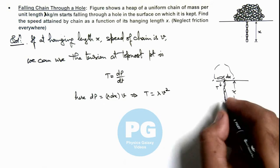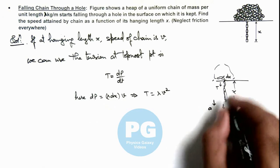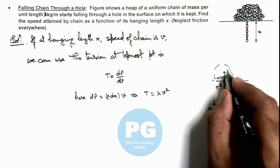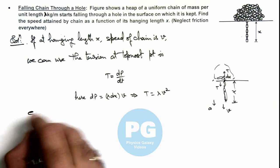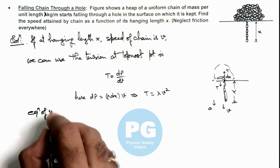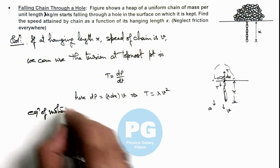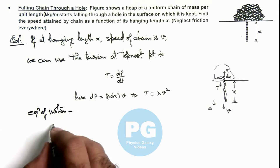If the acceleration of the chain is ay, tension would be acting in the upward direction. The equation of motion of the chain can be given as its weight lambda x g...